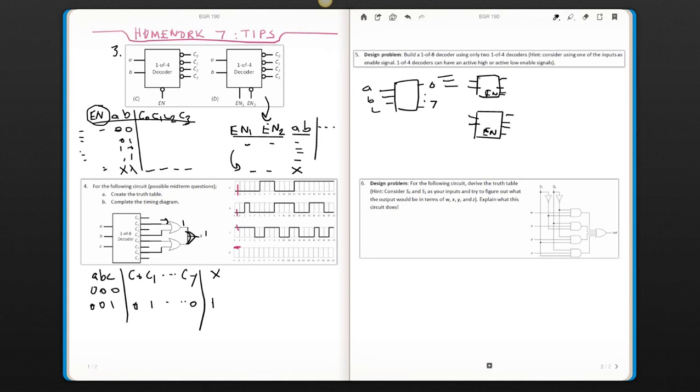So you would have only 2 inputs and enable, so you have 3 inputs, and you would have to enable 1 decoder at a time. So you cannot enable them at the same time, otherwise you end up choosing 2 outputs.